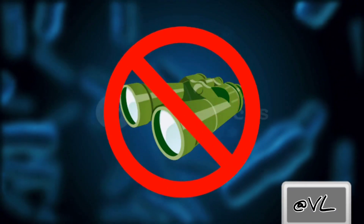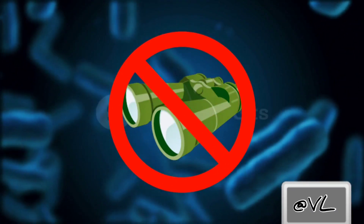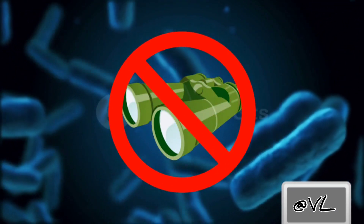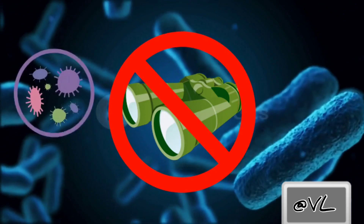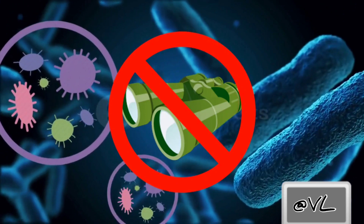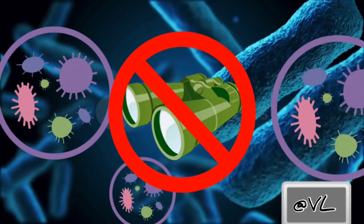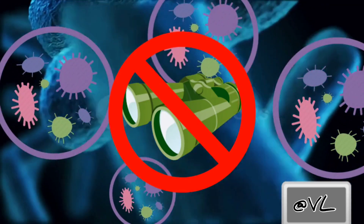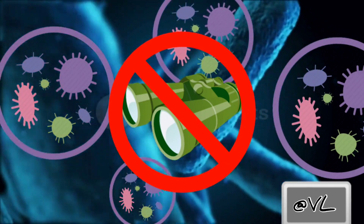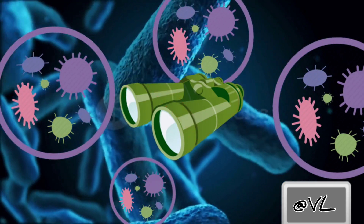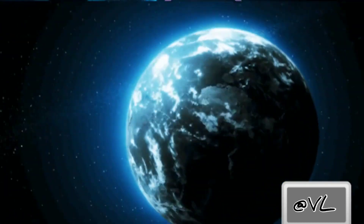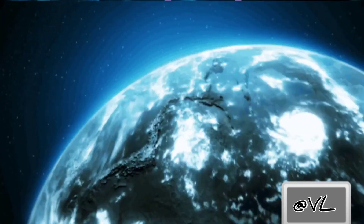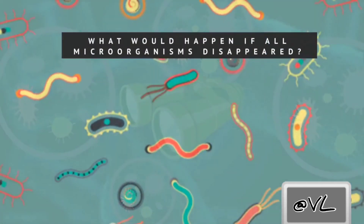We can't see them, but microbes are all around us. They live on your skin, in your gut, in your mouth, in the soil. They recycle waste and help plants. In short, they make the world go round.